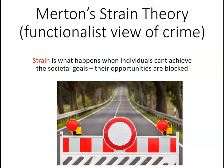Strain is what happens when individuals can't achieve their societal goals and their opportunities are effectively blocked. They're not able to achieve what they've been socialized to believe they should achieve, and that can lead to what's called strain - Merton's key theory. He argued that when strain occurs, individuals can end up suffering anomie because they don't feel part of wider society, or they'll commit crime because they don't care about the legitimate means.